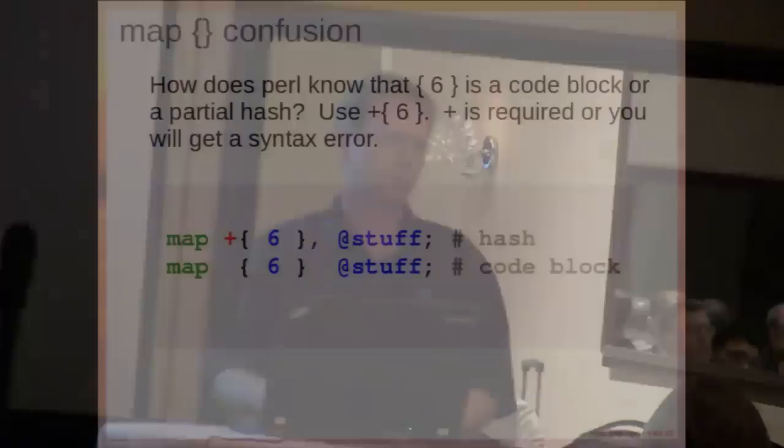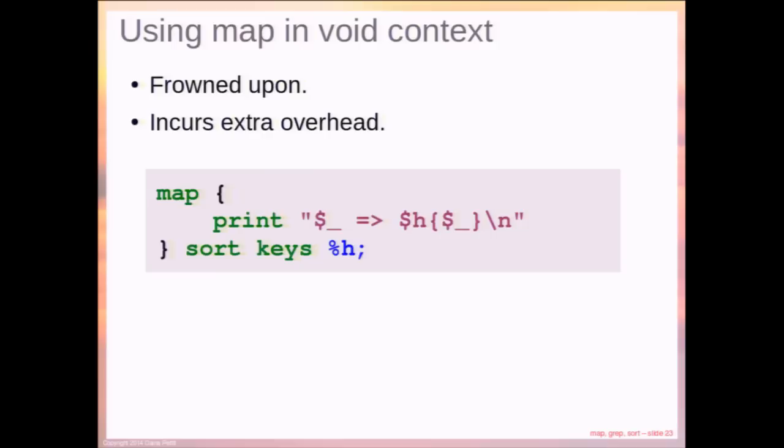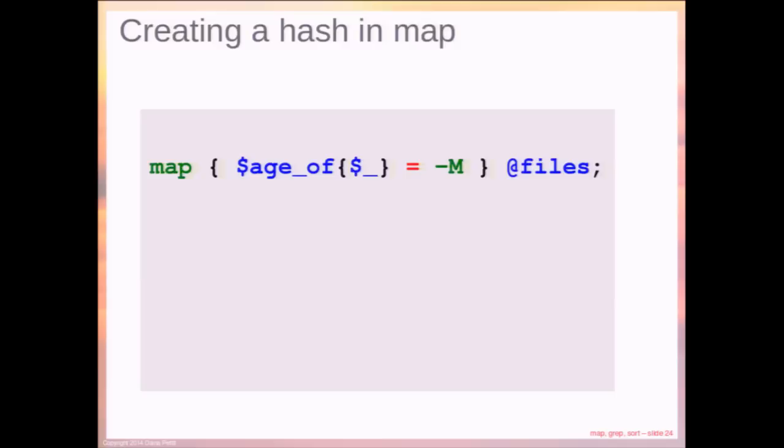Some of you may have seen a plus on a map code block and wondered what's going on. Map can get confused about whether it's receiving a partial hash or a code block, so you can force it to recognize the argument as a hash by putting a plus on there. You can add a plus and take it out and see what difference it makes. Also reiterating that map in void context might give you some problems — that's one thing to watch out for.